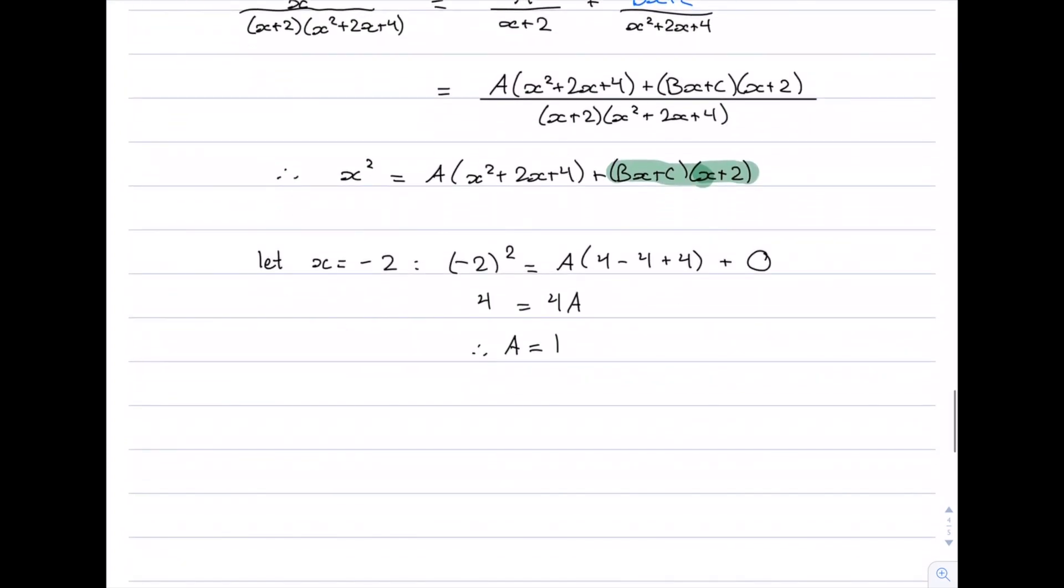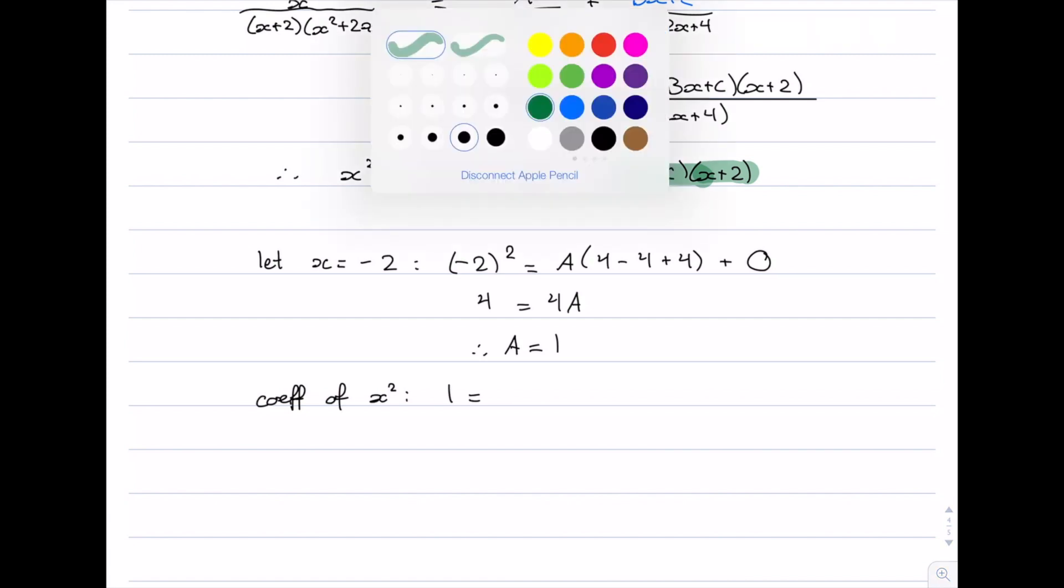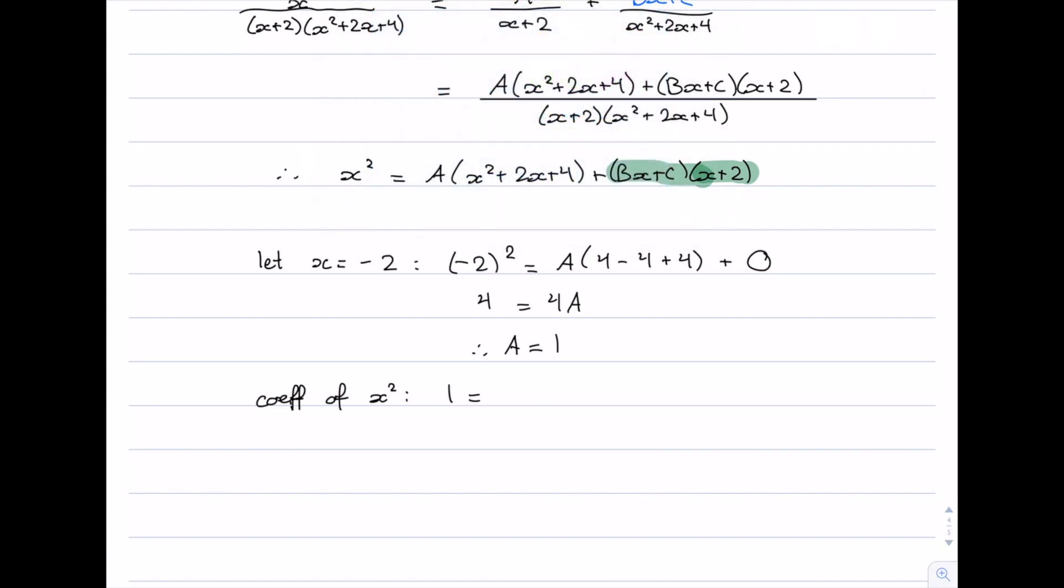Now what we can do is we can equate coefficients of maybe x² and the constant term. So the coefficient of x², what does that give us? Well on the left hand side, the coefficient of x² is 1, and on the right hand side you can see that the coefficient of x² is going to come from A times x² and then from Bx times x. So what would the coefficient be? Well it would be A times 1, which is A, plus B times 1, which is B. But I already know what A is, I just worked that out above. It's equal to 1, and so therefore B is equal to 0.